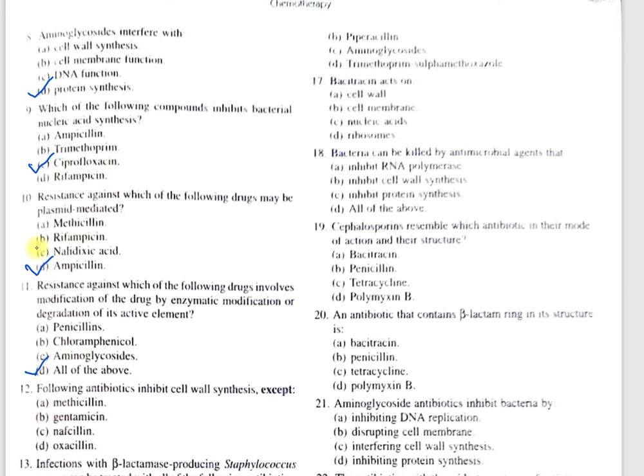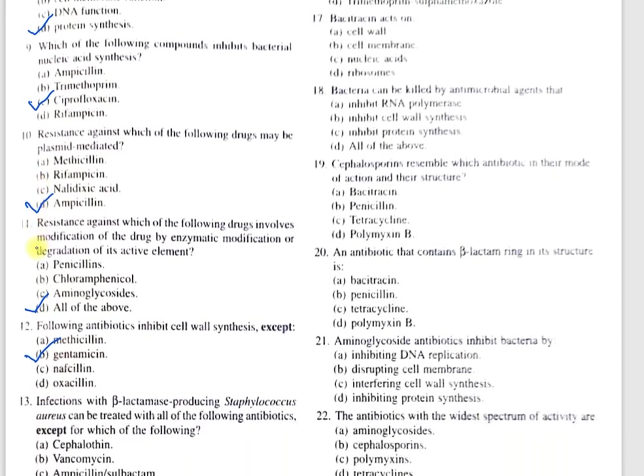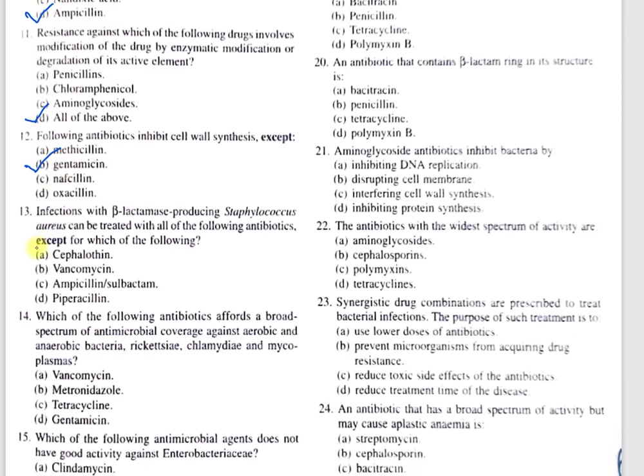Question number 12: Which of the following antibiotics inhibits cell wall synthesis? A, methicillin; B, gentamicin; C, nafcillin; D, oxacillin. The correct option is B, gentamicin — as the odd one out. Gentamicin inhibits protein synthesis, not cell wall synthesis.